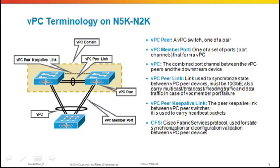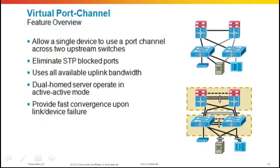Let's look at the feature overview. VPC allows a single device to use a port channel across two upstream switches — that's the key difference between a port channel and a virtual port channel. It eliminates spanning tree protocol blocked ports and uses all available uplink bandwidth in an active-active scenario. Dual-homed servers and switches operate in active-active as well, and VPC provides fast convergence upon link or device failure.